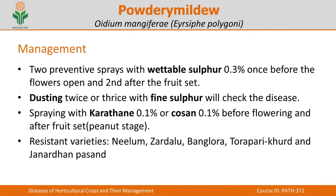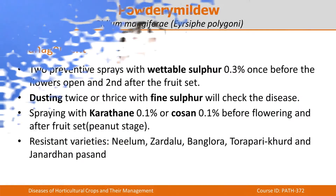In India, several resistant varieties have been developed, including Neelam, Jaddalu, Bangalora, Tora Para Khut, and Janardhan Pasand. Bangalora is a very popular variety. These varieties have been identified as resistant to powdery mildew, and using them is an important part of disease management.